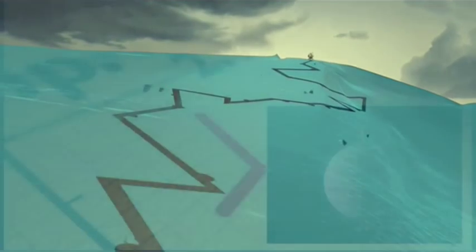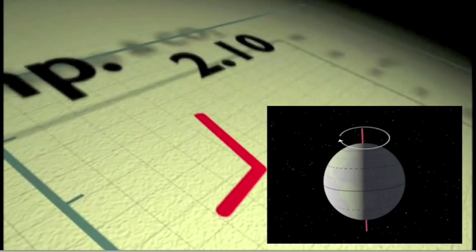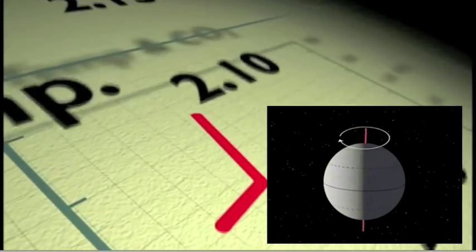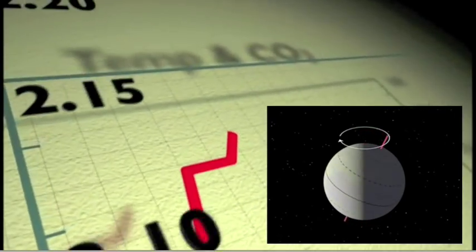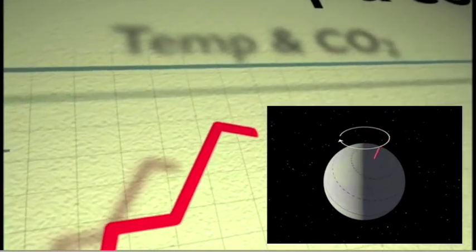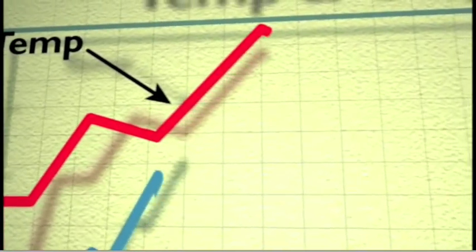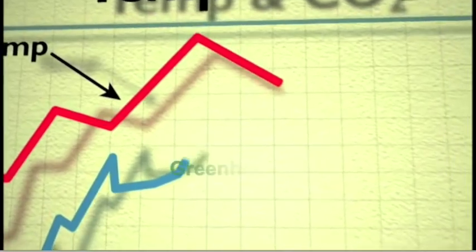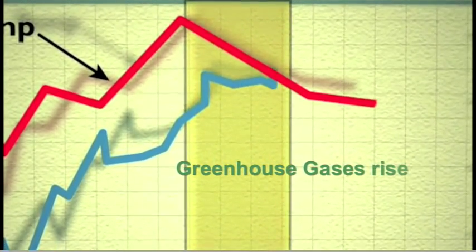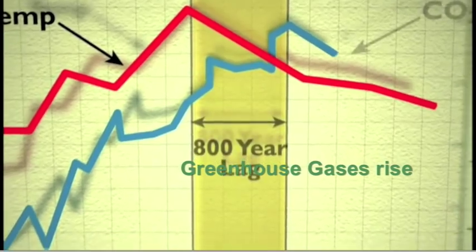What the graph shows is good support for Milankovič theory, as well as Hansen's prediction. Orbital factors begin a long, slow warming trend, which causes the outgassing of CO2 and methane from oceans and soils, reinforcing and amplifying the weak orbital warming and creating dramatic global change.